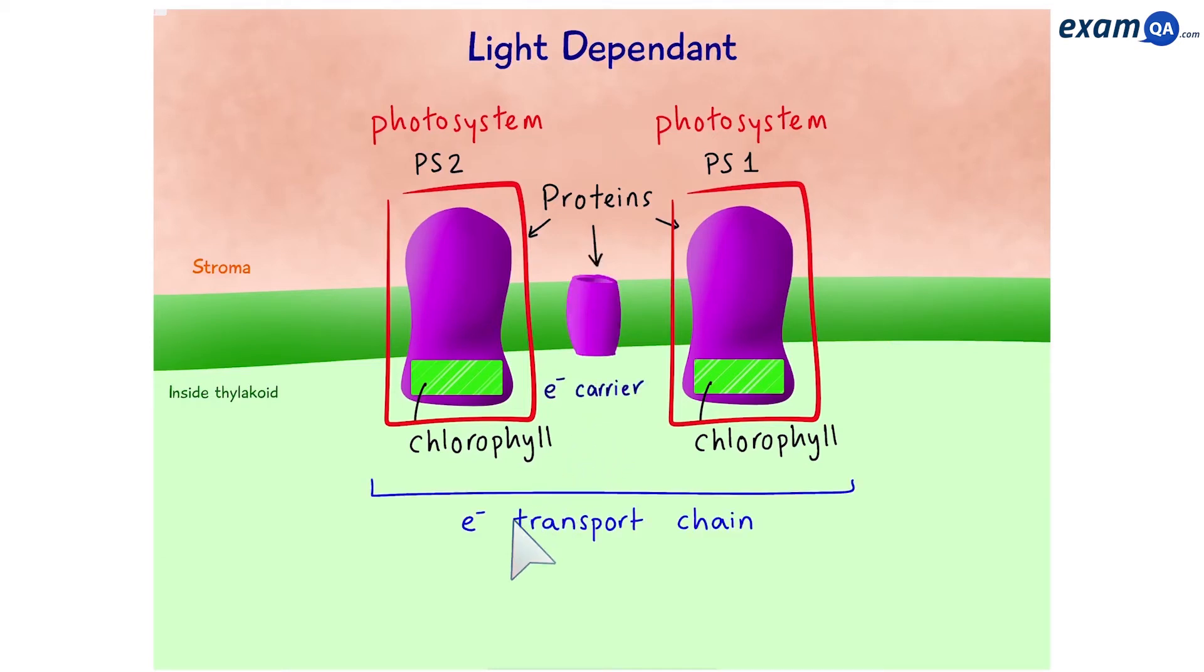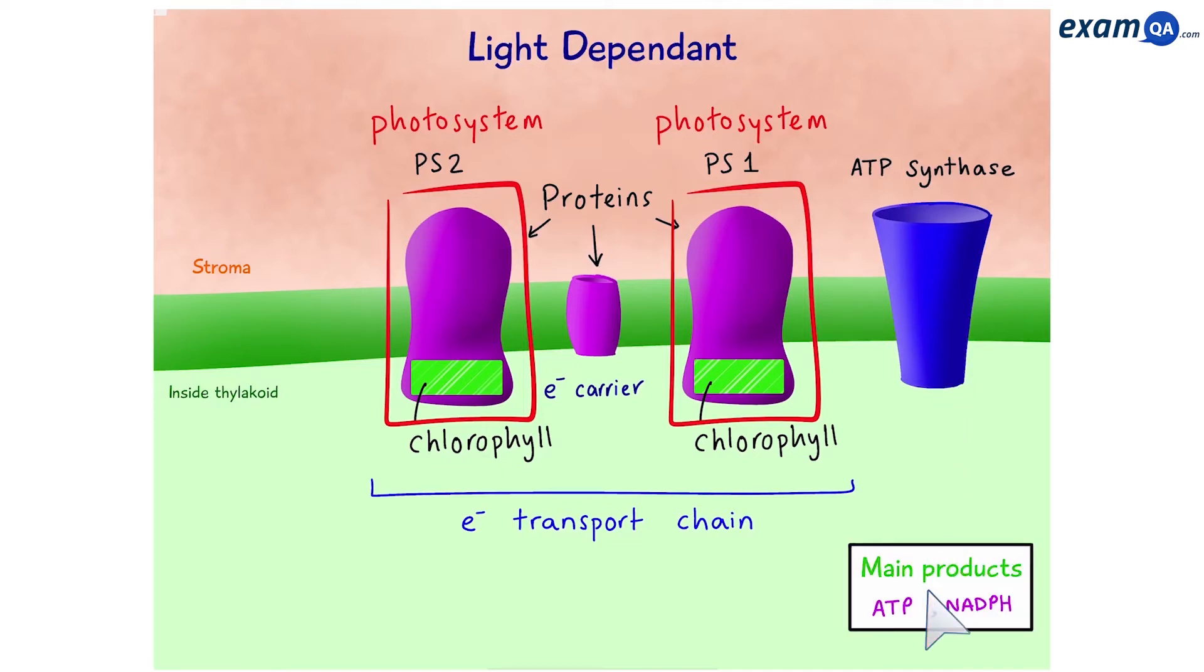Together, these two photosystems and the electron carrier make an electron transport chain. We also have ATP synthase, which is an enzyme and an ion channel in one. This is also bound within the membrane. Now, the goal of this stage is to create ATP and NADPH so that they can move on to the second stage. So, let's see how they're made.